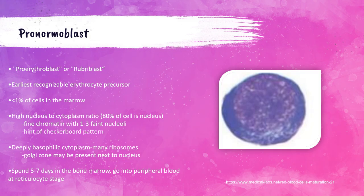The pronormoblast — also called a rubroblast or proerythroblast — is the earliest recognizable erythrocyte precursor, the first identifiable cell in the red blood cell lineage. It accounts for less than 1% of all cells present within the bone marrow. There is a high nucleus to cytoplasm ratio, with around 80% of the entire cell being nucleus. You can also sometimes see faint nucleoli — these cells can have one to three nucleoli appearing as faint little circles within the nucleus.